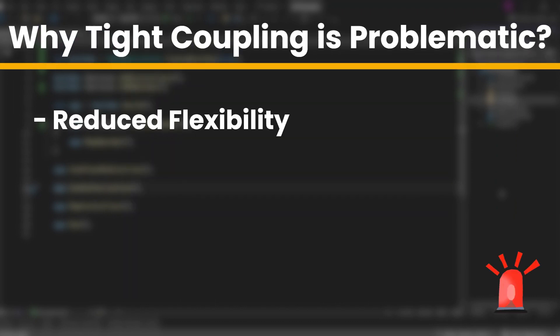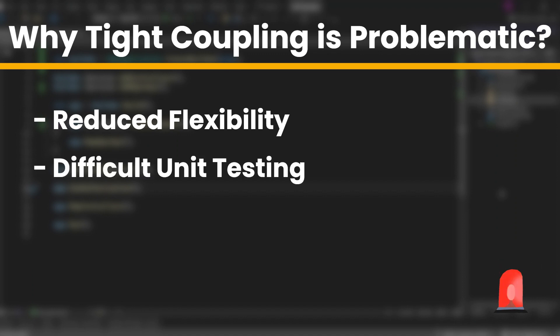Think about it this way. If you want to replace engine with a different version, you'd have to manually modify the car class. This makes it much harder to switch components or extend functionality without changing existing code. When car directly depends on engine, testing becomes a challenge. You can't easily replace engine with a fake or mock version, meaning tests for car will always include engine. This makes unit testing more complex and harder to isolate problems.